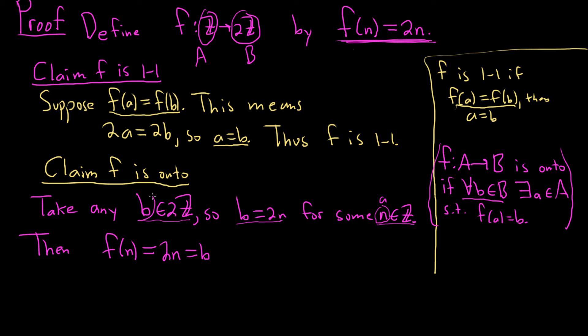For our little b in capital B, we found some little a in capital A. So for all little b in capital B, we have a little a in capital A, such that f of little a is equal to B. So this means f is onto. And again, it's just satisfying this definition right here.